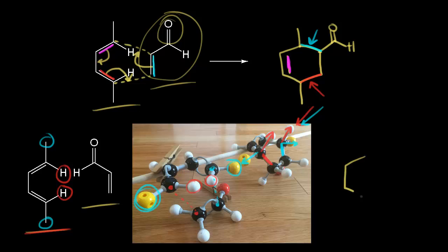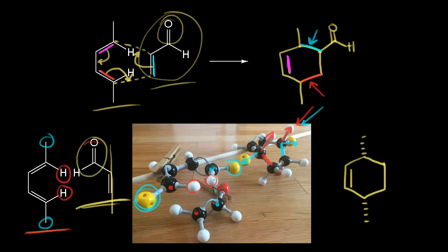Let's draw that in for our product. We have our ring with our double bond. Those methyl groups are going away from us, so we put those on a dash — there's one methyl group and there's the other one. Next let's think about the dienophile. If we draw a line, the stuff to the left ends up down, so this aldehyde is going to be down in space. This endo approach gives us stabilization between the developing pi bond and our carbonyl. In our product, this aldehyde is going away from us in space, so we put that aldehyde on a dash.